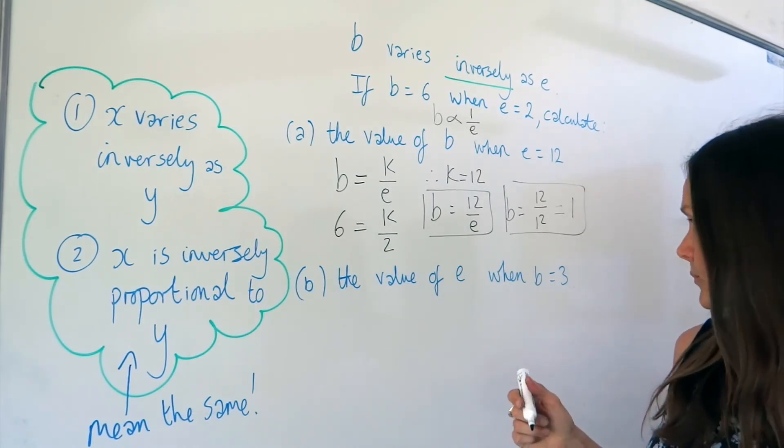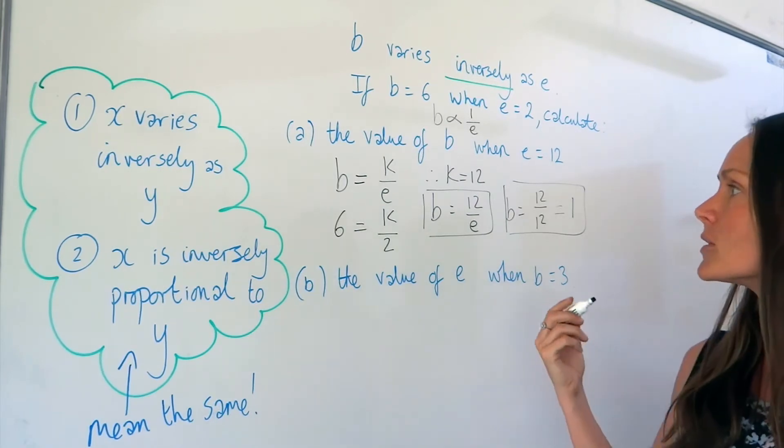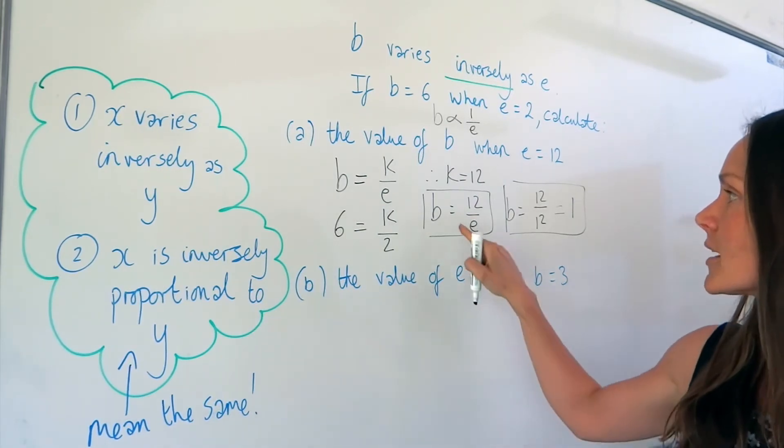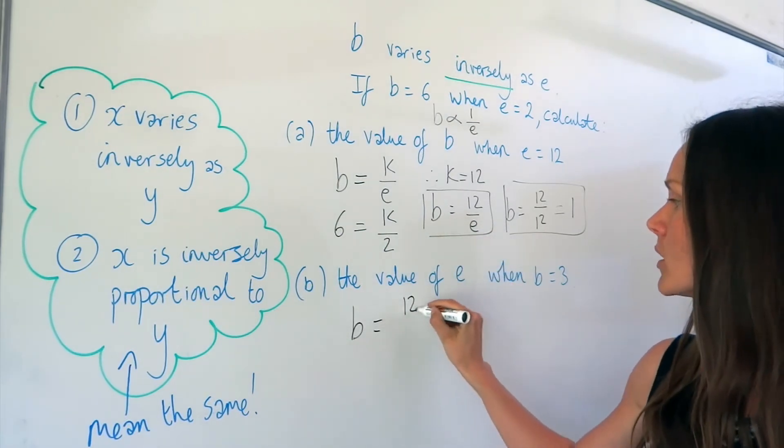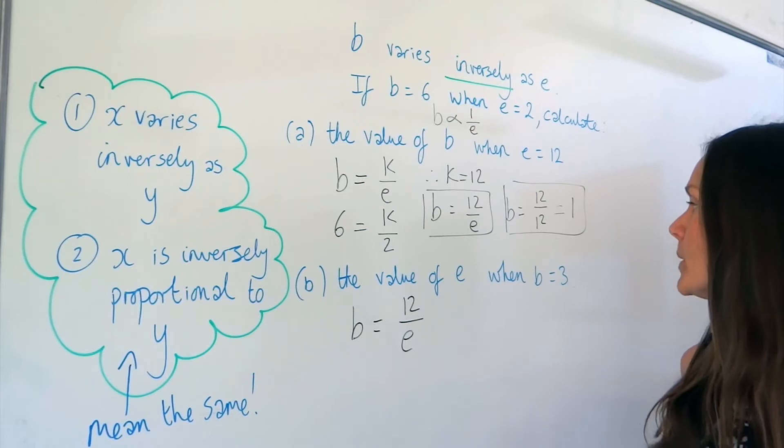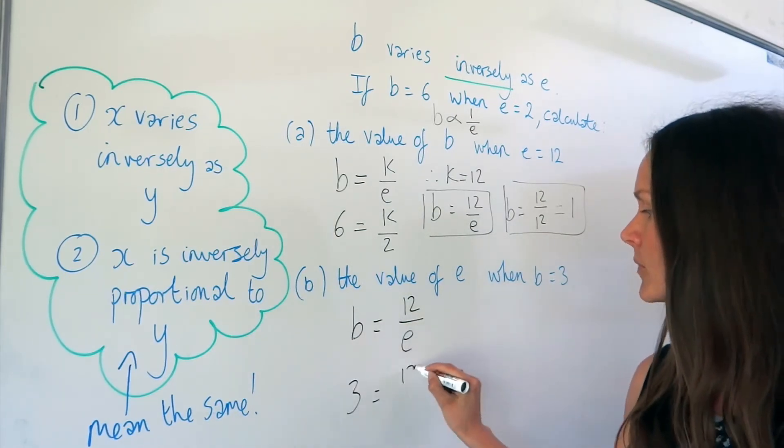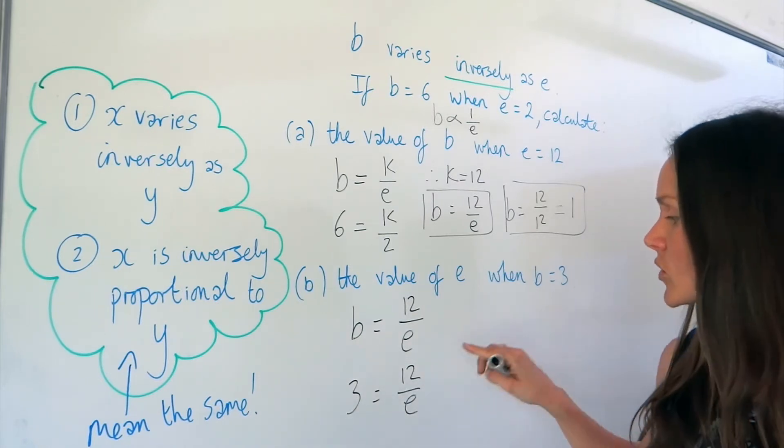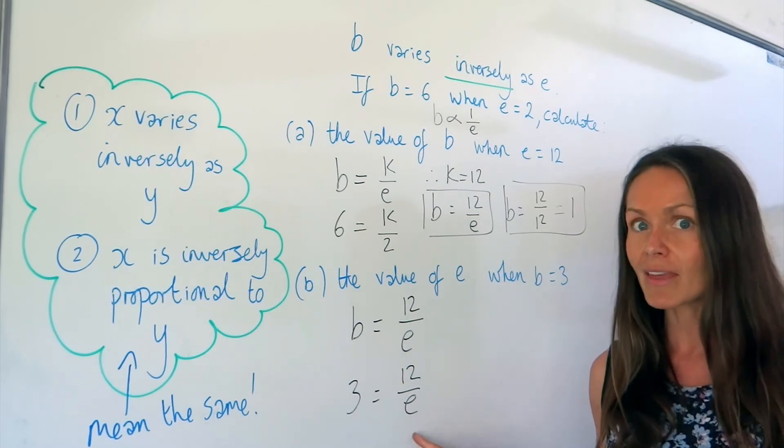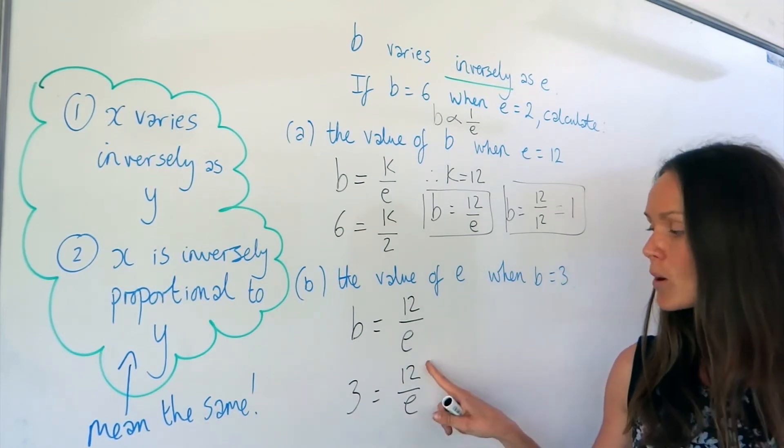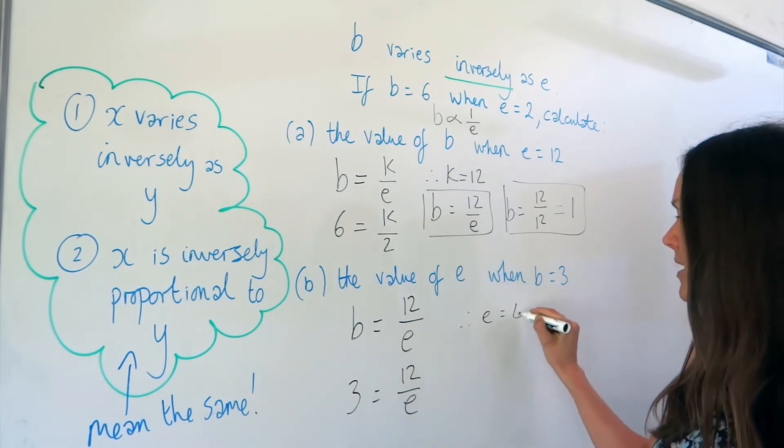Now, on to the next bit. It says find the value of E when B is 3. So the same as before, we're going to use this equation, connecting B and E. Except this time, we need to change the value of B to 3. So over here, this becomes 3. Everything else stays the same. So 12 divided by something gives me 3. So that something, the E value, must be 4, because 12 divided by 4 is 3. So E is 4.